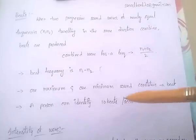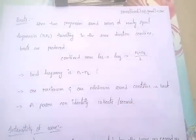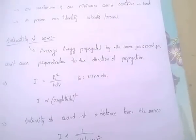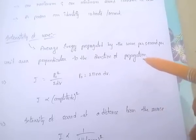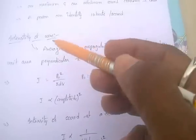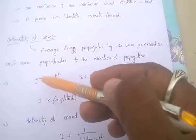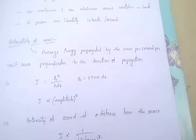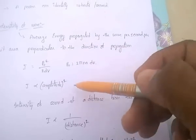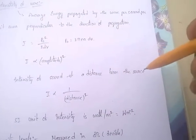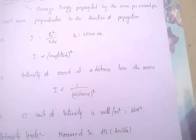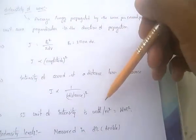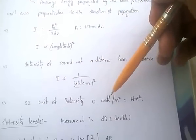A person can identify only 10 beats per second. The intensity of a wave is the average energy propagated per second per unit area perpendicular to the direction of propagation, given by I = P₀² / (2ρV), and is proportional to amplitude squared. Intensity at a distance from the source is proportional to 1/distance². The unit of intensity is watts per metre squared.